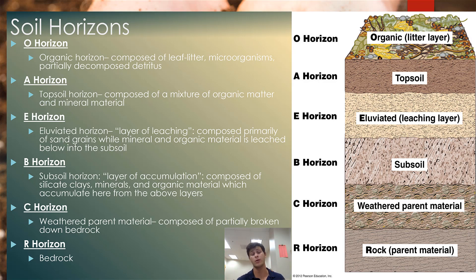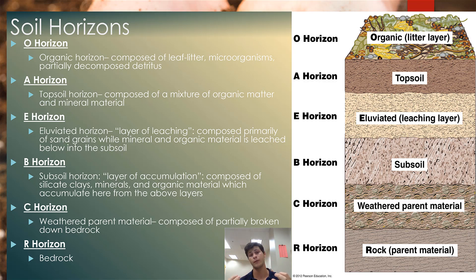Moving downward from the A-horizon, you get to the E-horizon — the eluviated horizon, meaning downward transport of particles. Sometimes called the layer of leaching, it is primarily composed of sand grains while mineral and organic material is leached out and deposited downward. The A-horizon is very dark with enriched mineral and organic material, while the E-horizon is very pale and nutrient-depleted — water has grabbed all the nutrients and transported them downward.